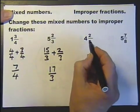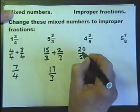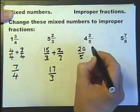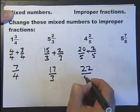4 and 2 fifths. 4 fives are 20. So 20 fifths is the 4 whole, plus 2 more fifths, gives me a total of 22 fifths.